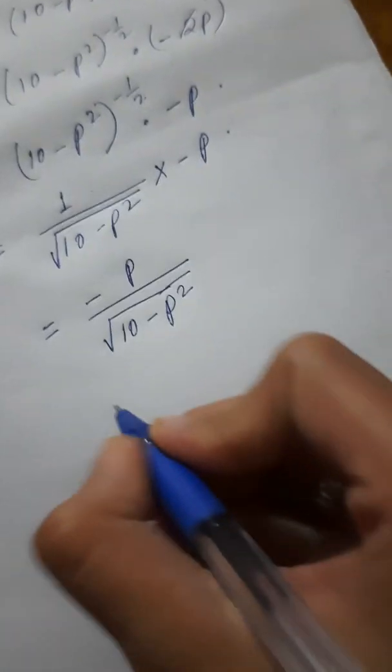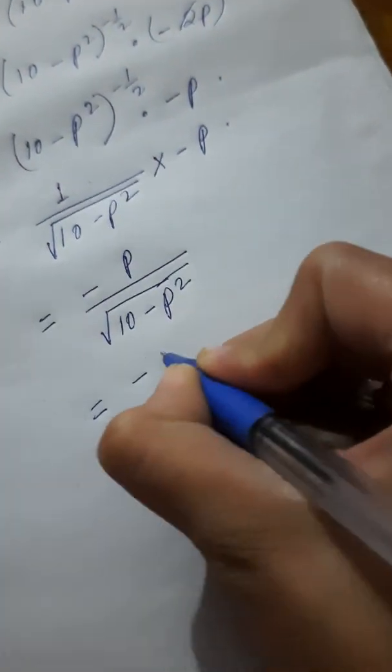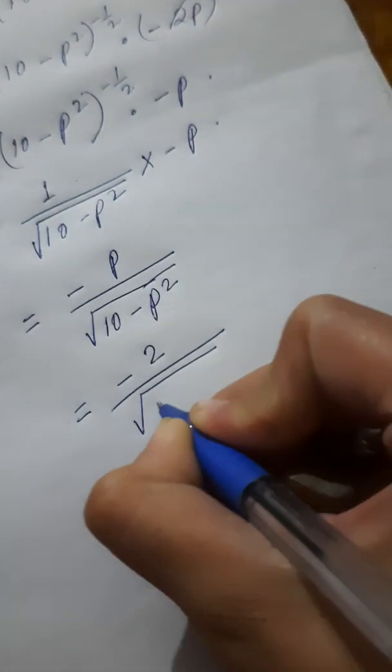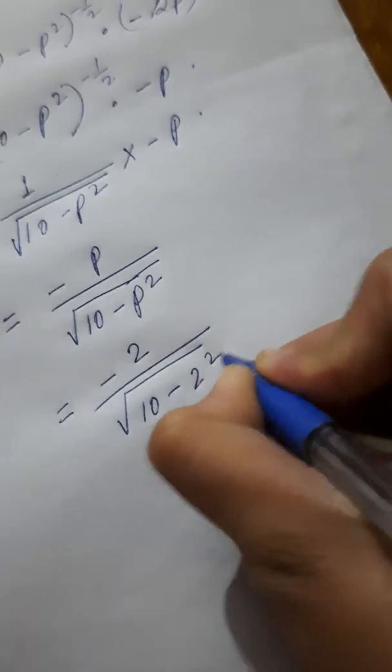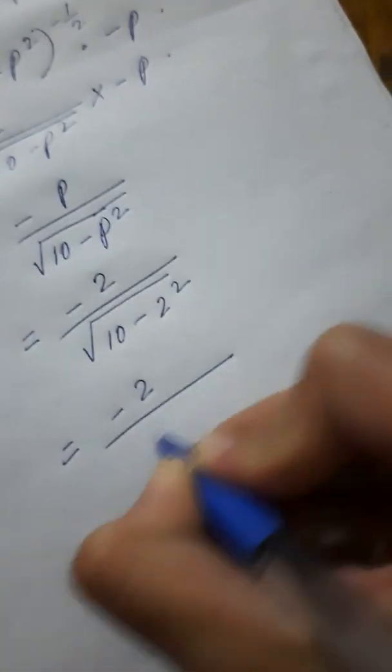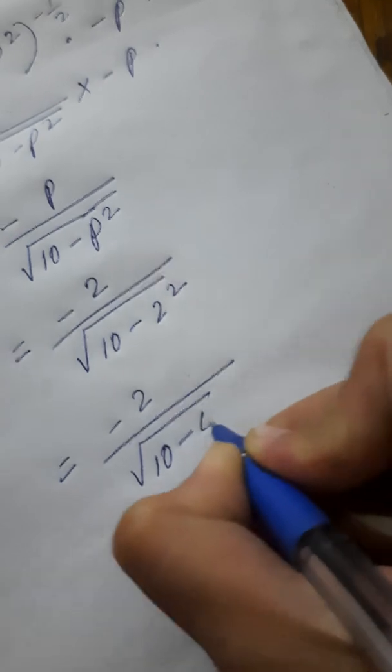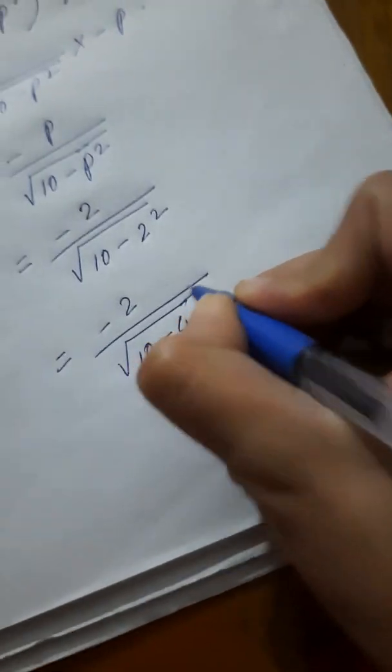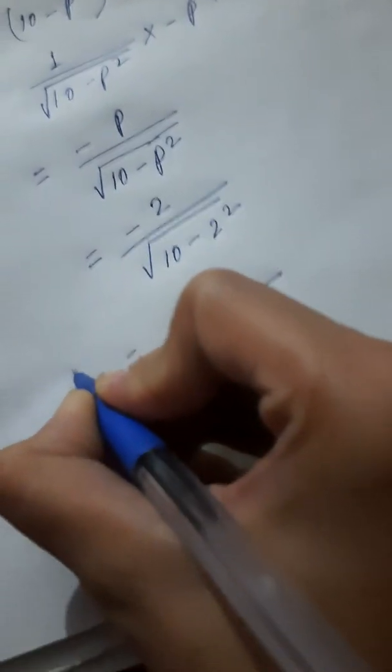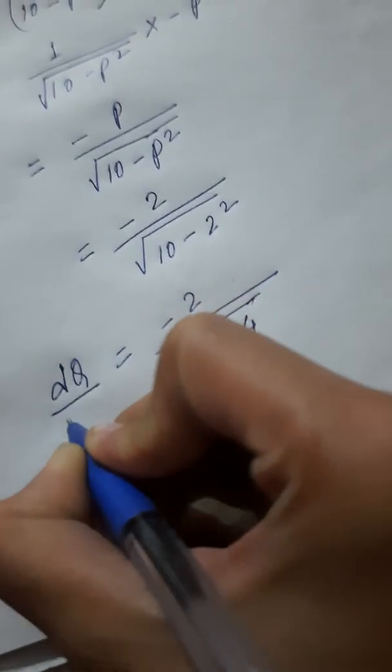Now we know that p equals 2. So, minus 2 by root 10 minus 4, or minus 2 by root 6. So this is our value of dq by dp.